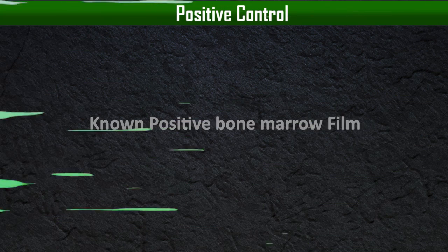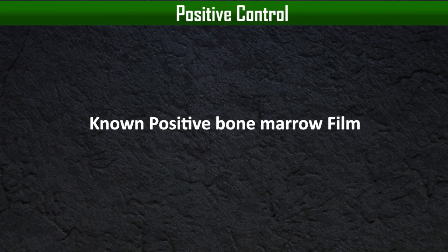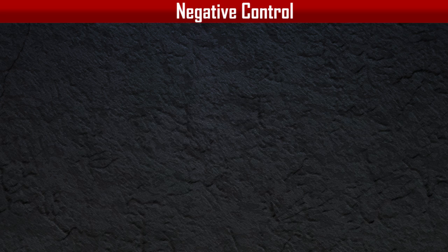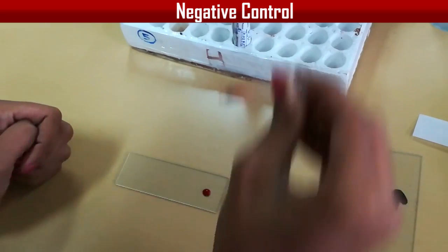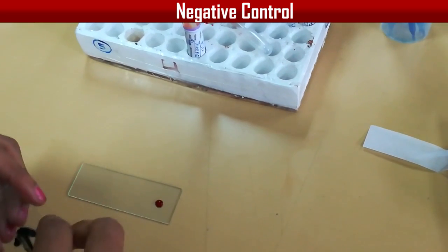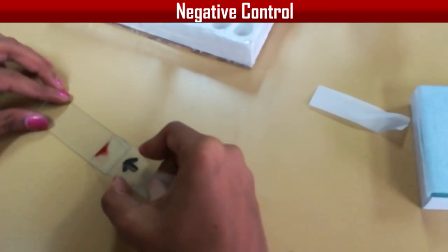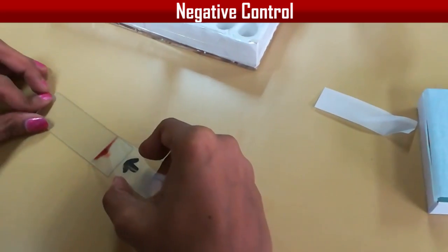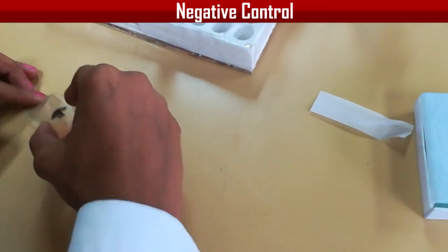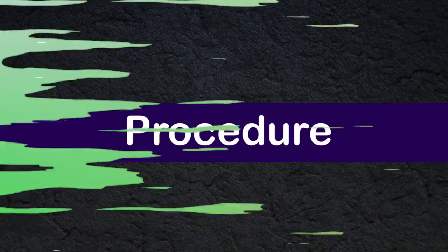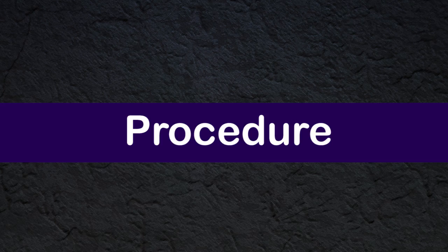For positive controls we can use a known iron-positive bone marrow film, and for negative control we can use a healthy blood film. Procedure: